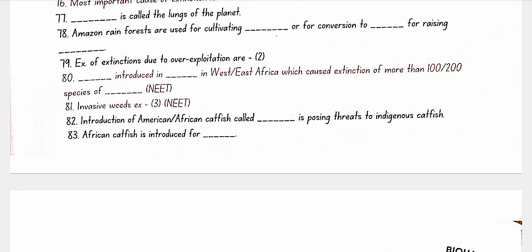Nile perch introduced in Lake Victoria, East Africa, caused extinction of more than 200 species of cichlid fish. Invasive weed examples: carrot grass (Parthenium), Lantana, and water hyacinth (Eichhornia). African catfish called Clarias gariepinus was introduced for aquaculture purposes and poses threats to indigenous catfish species.